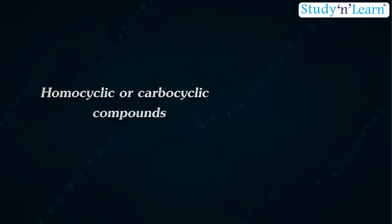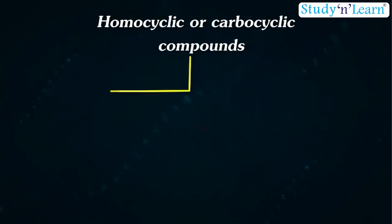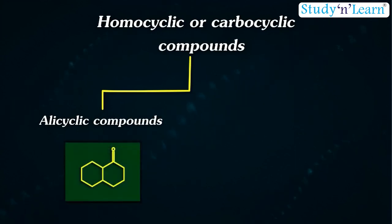Further, homocyclic or carbocyclic compounds are divided into two parts as shown: 1. Alicyclic compounds and 2. Aromatic compounds.